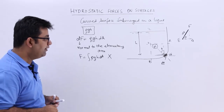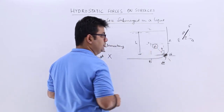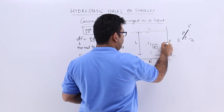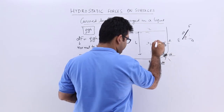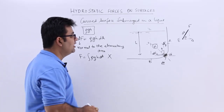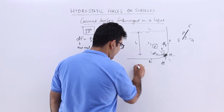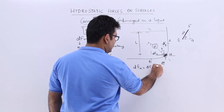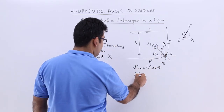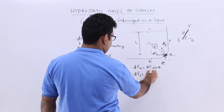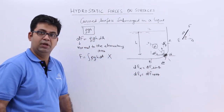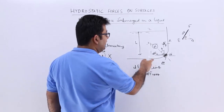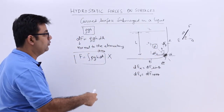So what do we do? We resolve dF into two components: dFy and dFx. So dFx equals dF sin theta, and dFy equals dF cos theta. Because we cannot integrate directly, we resolve the small elementary force into two components — one vertical and one horizontal.